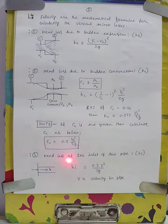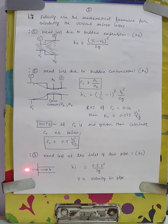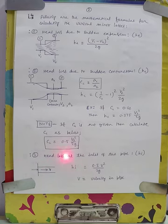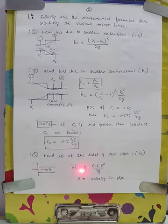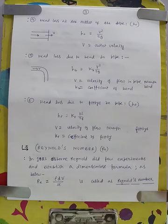Next loss: head loss at the inlet of the pipe. Suppose from a tank the fluid is going to enter the pipe — that is one example of the inlet. At the inlet of the pipe, where the fluid will enter the pipe, there will be some loss of head, indicated by H subscript i, and it is given by H_i = 0.5 × V² / 2g, where V is the velocity of flow in the inlet pipe.